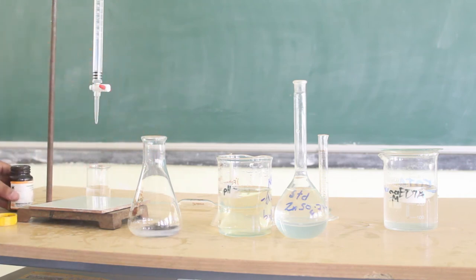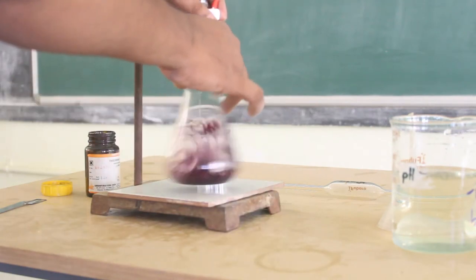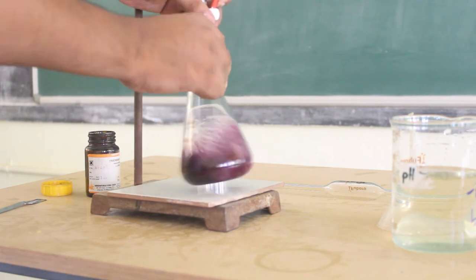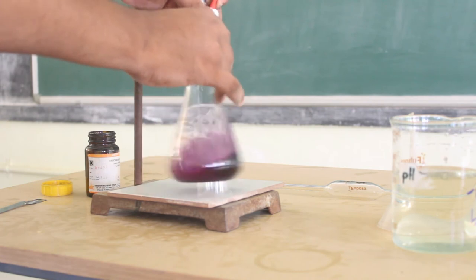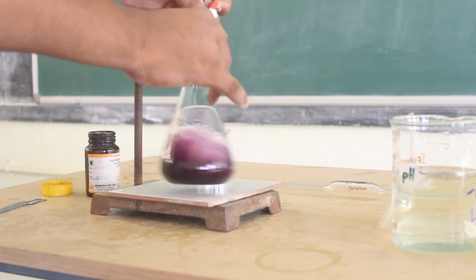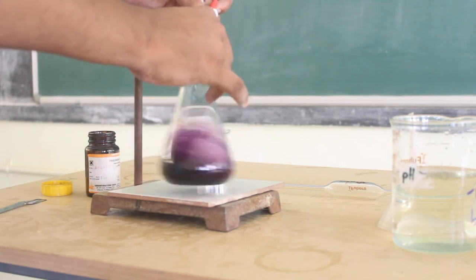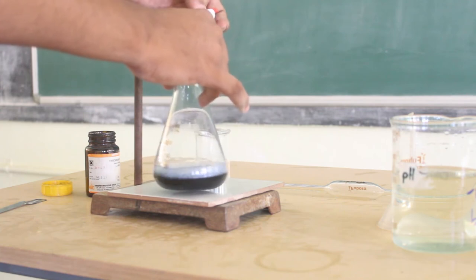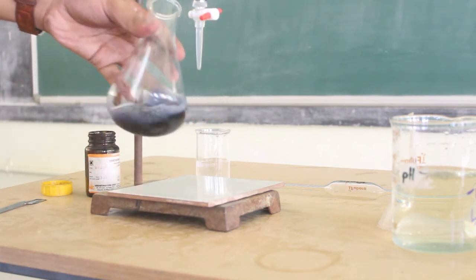Next, we will start the titration. The initial burette reading is 0.0. The titration is sped up in order to consume less time. The end point is wine red to deep blue color. You can clearly observe the deep blue color. If you don't have white tiles or white paper, place something under the conical flask to maintain a clear observation of color change. This is the end of Trial 1. The end point reading is 29.1.